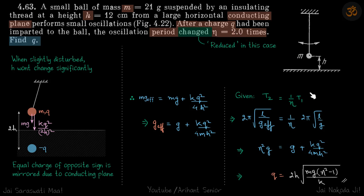When slightly disturbed, h will not change significantly. So let's assume this force mg and kq²/2h² both are constants. Now we can write mg effective on this ball is mg plus kq²/4h².